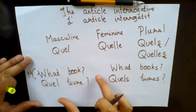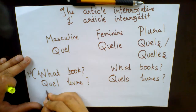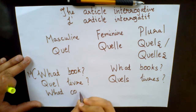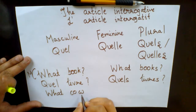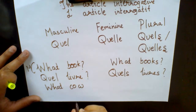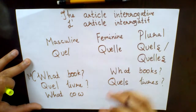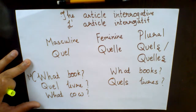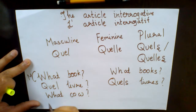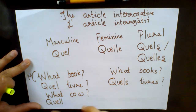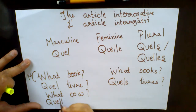Now, what if you have the feminine form and need to translate it into plural? For example: 'what cow?' — 'cow' is feminine in French. I know many of you might be wondering why I'm using this example, but it is easier for you to recall. So you use 'quelle' for the feminine form.